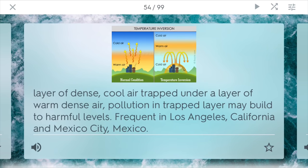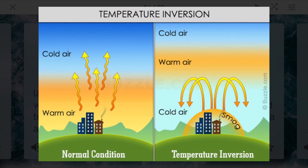Temperature inversion. This is when a layer of dense, cool air is trapped under a layer of warm, dense air, and pollution is trapped in this layer. Oftentimes it can build up to harmful levels. You see this in places like L.A. and Mexico City, where normally you have warm air rising up to the cold air, but the cold air is stuck between the warm air and different types of areas on the ground, and it can start to allow smog to build up.